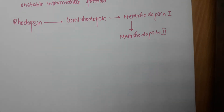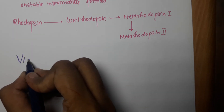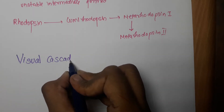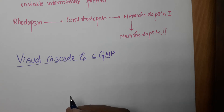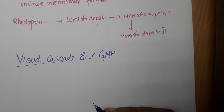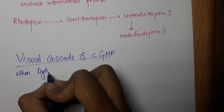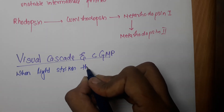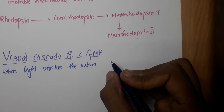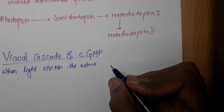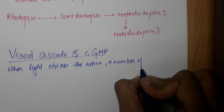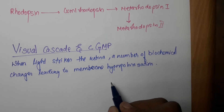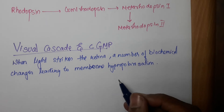The next topic is the visual cascade and cyclic GMP. When light strikes our retina, a number of biochemical changes take place, which lead to membrane hyperpolarization. This hyperpolarization of the membrane is brought about by the visual cascade involving cyclic GMP.